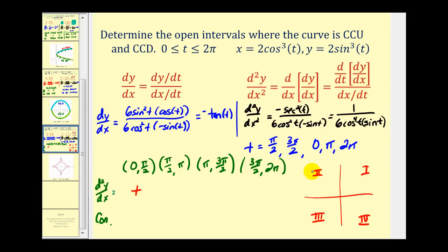In the second quadrant sine is positive so this will be positive. Cosine is negative but we're raising it to the fourth power. So this will also be positive. Therefore the second derivative is positive.